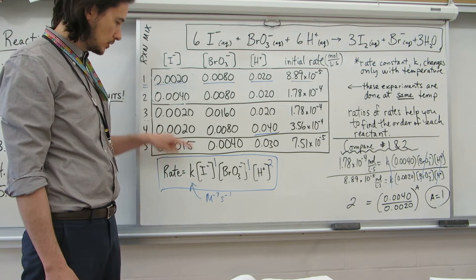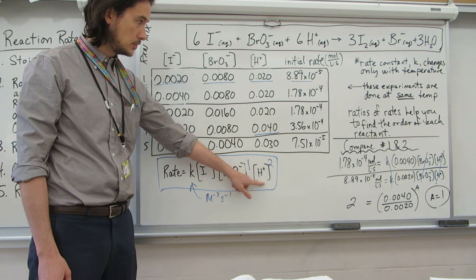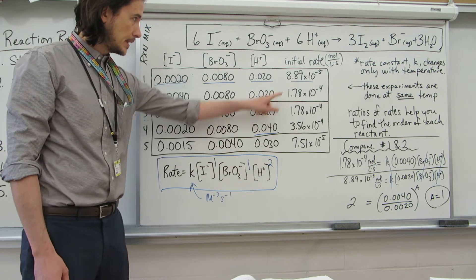we just need to plug in 0.002 here, 0.008 here, each to the first, 0.002, 0.02 squared, and then plug in this,